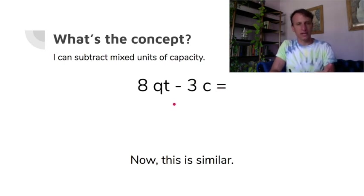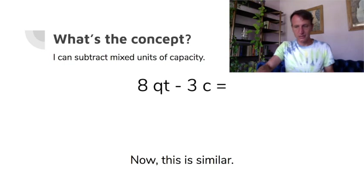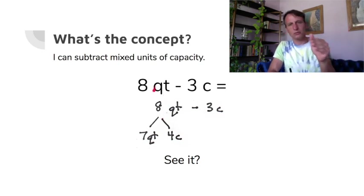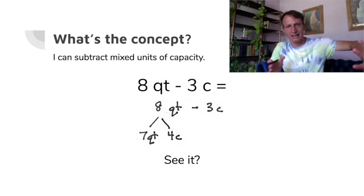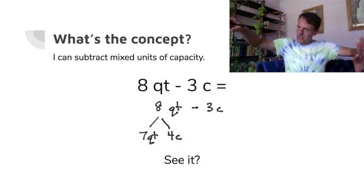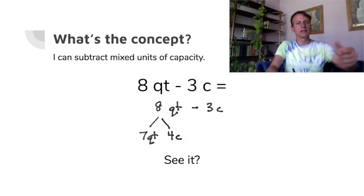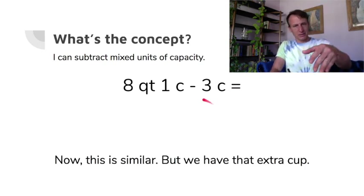Similar one: eight quarts minus three cups. There are four cups in one quart — two pints in a quart, two cups in each pint. So eight times four is thirty-two cups. Thirty-two minus three is twenty-nine cups. Another method: set aside seven quarts, pour the eighth quart into four cups, then take away three cups. Final answer: seven quarts and one cup.